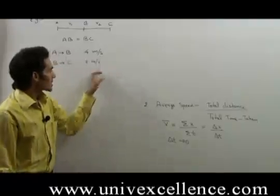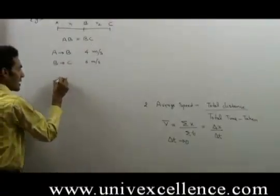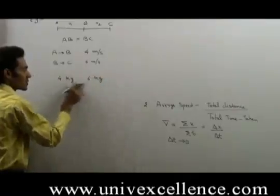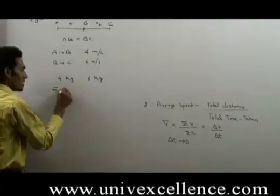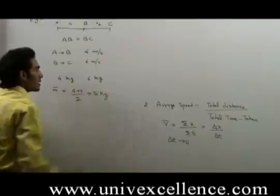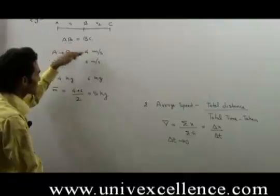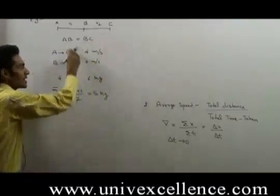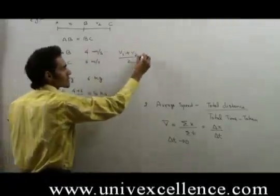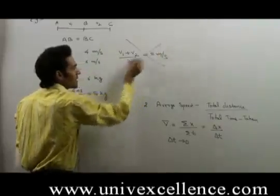The common misconception is that, like average masses — for example, if two objects have masses 4 kg and 6 kg, their average mass is (4 + 6) / 2 = 5 kg — students generally apply the same logic to speed and take average speed as (V1 + V2) / 2, predicting the answer as 5 meters per second, which is completely wrong.